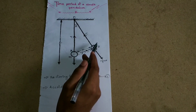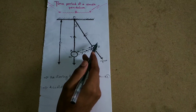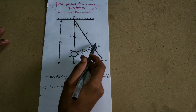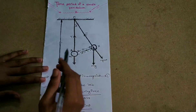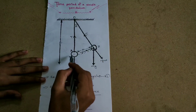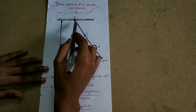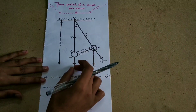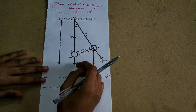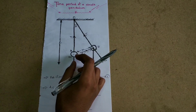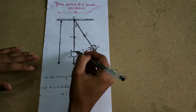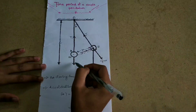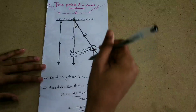A weight suspended by a perfectly flexible and inextensible string from a perfectly rigid support is called a simple pendulum. The face is fixed and we need to set the position, and the inextensible thread is set at a fixed point so it hangs freely in the vertical downward direction.